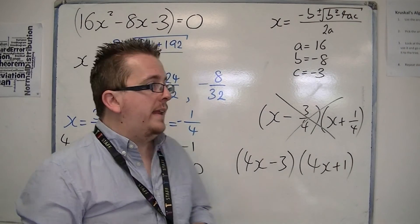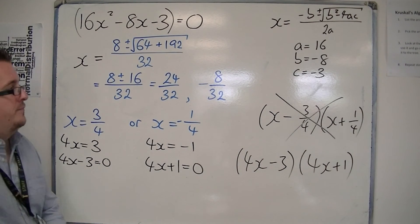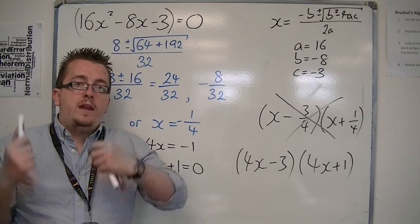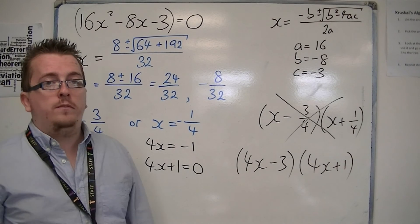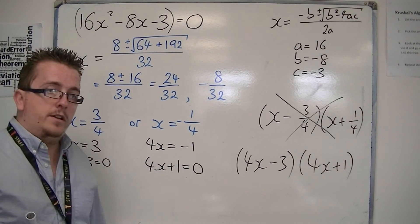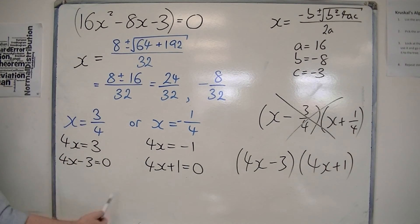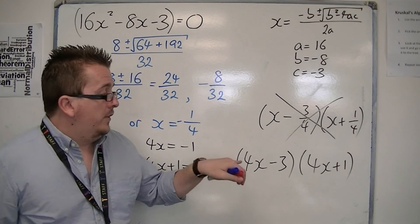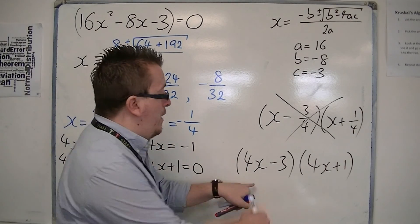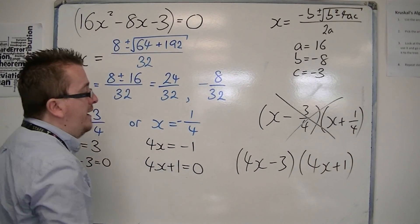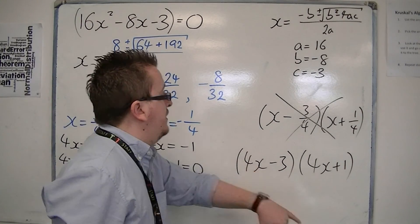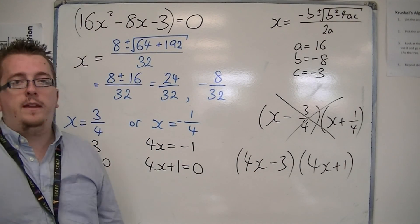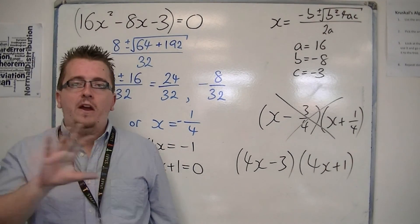And really this is a method that I would use if you were really struggling as to being able to factorise an expression. It can work, you must do this stage, rearrange it so you get 0 on one side of the equation, and you get it into nice terms, so that you can write it like that, because now 4x times 4x makes the 16x squared, 4x times 1 and minus 3 times 4x combined to make minus 8x, and minus 3 times 1 is the minus 3. So use this as a very last resort.